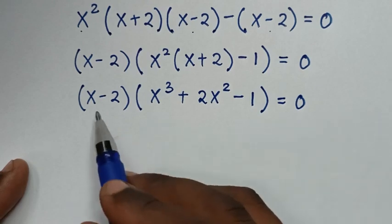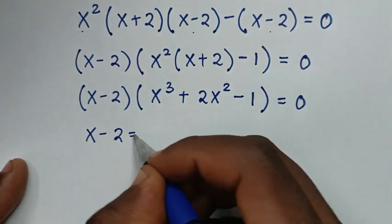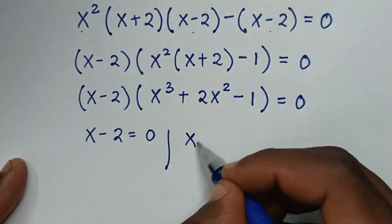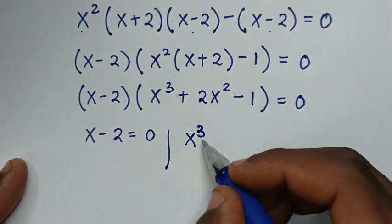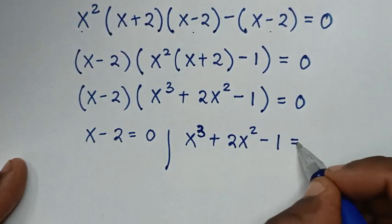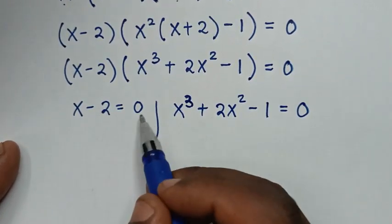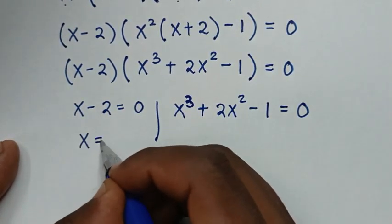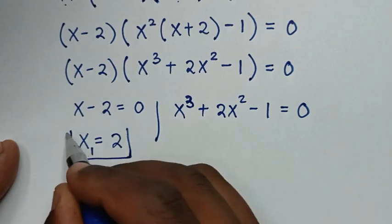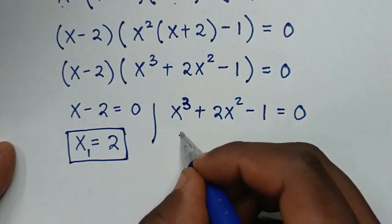From here we have two solutions. The first solution: x - 2 = 0, so x = 2. This is the first value of x. The second solution is the cubic equation x³ + 2x² - 1 = 0.